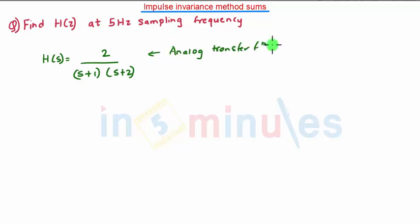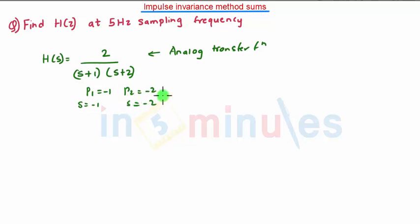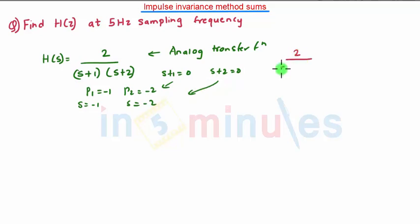As H(s) is combined, we will use a partial fraction expansion method to separate the denominators. We can see that pole p1 is equal to minus 1, that is s equals minus 1, and pole p2 is equal to minus 2, that is s equals minus 2. When we equate s+1=0 and s+2=0 we get these values. We will use the partial fraction method: 2 divided by (s+1)(s+2) equals A/(s+1) plus B/(s+2).